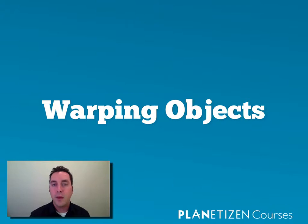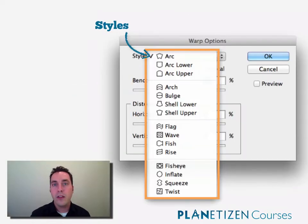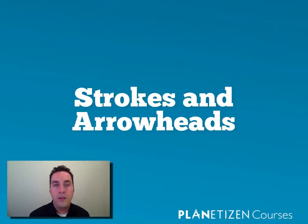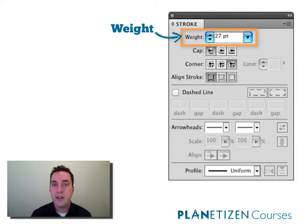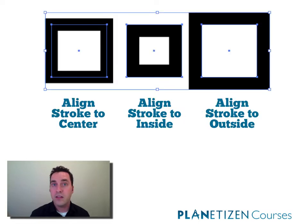We'll talk about warping objects, both using the warp tool and using other warp tools available in Illustrator. We'll talk about how to create strokes and arrowheads, so that you can create lines that have different weights and have all sorts of applications, especially around map making and diagrams.